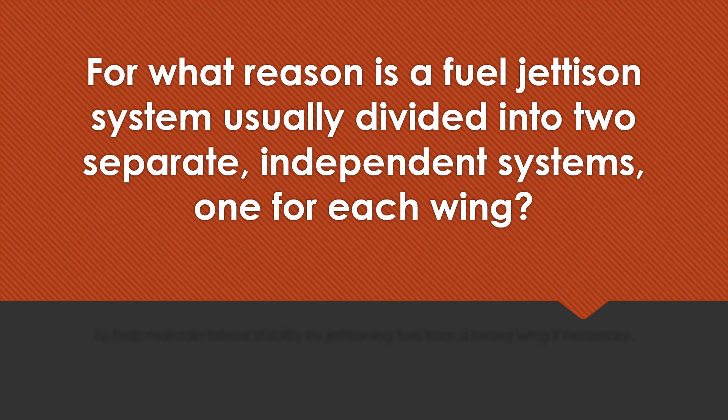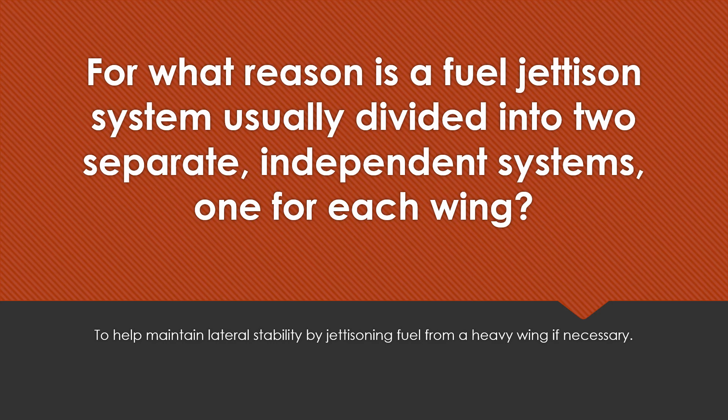For what reason is a fuel jettison system usually divided into two separate independent systems, one for each wing? To help maintain lateral stability by jettisoning fuel from a heavy wing if necessary.